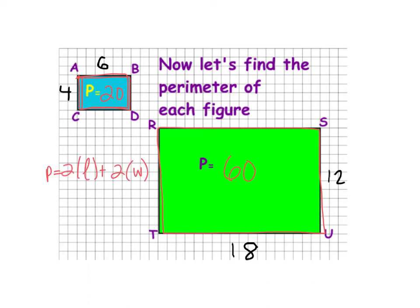Another way that you could do this — remember the perimeter formula — you're doing 2 times the length plus 2 times the width.